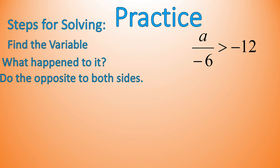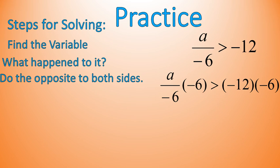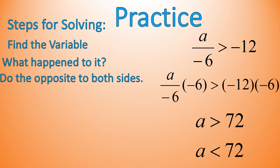Now it's time for some practice. Go ahead and solve this one: A divided by negative 6 is greater than negative 12. Welcome back — hopefully you've solved that one. With this question, we find our variable A. What happened to it? It was divided by negative 6. So I'm going to multiply times negative 6 on both sides of the inequality. A divided by negative 6 times negative 6 — they cancel each other out and you're left with A by itself on the left. Negative 12 times negative 6 gives me a positive 72. So A is greater than positive 72... but wait, that's not right. I have to switch the signs. Because I multiplied times a negative, I have to remember to switch the sign. So it's actually A is less than 72.